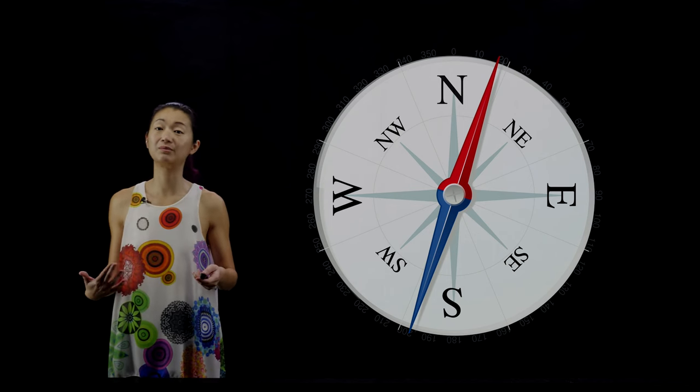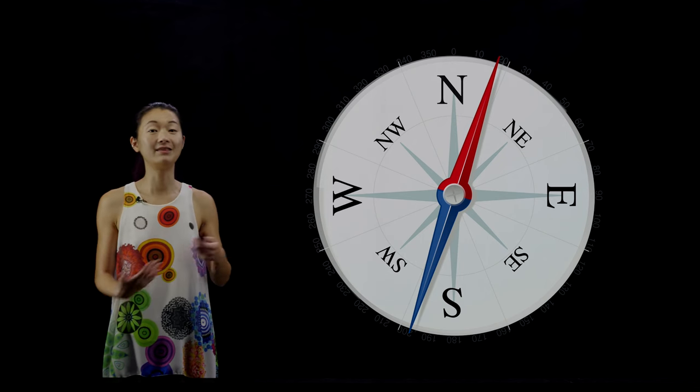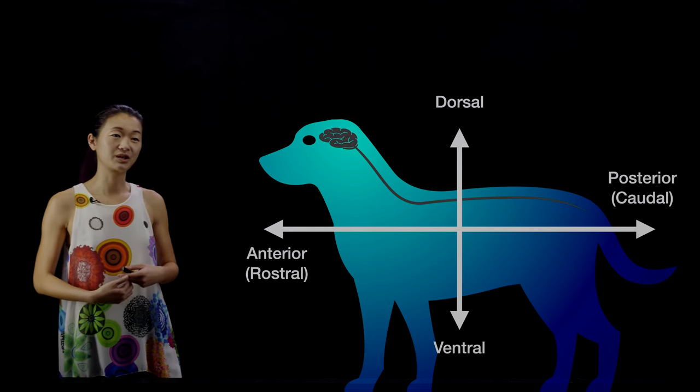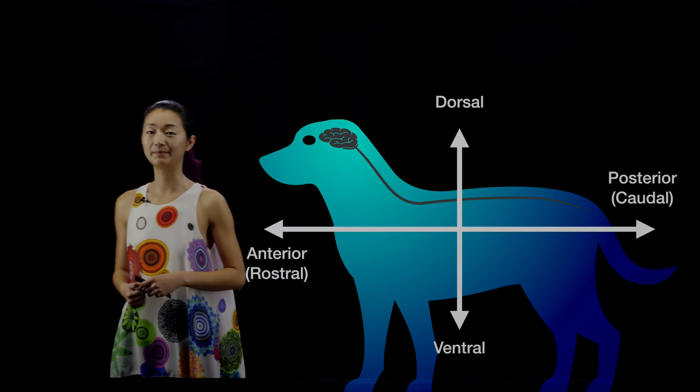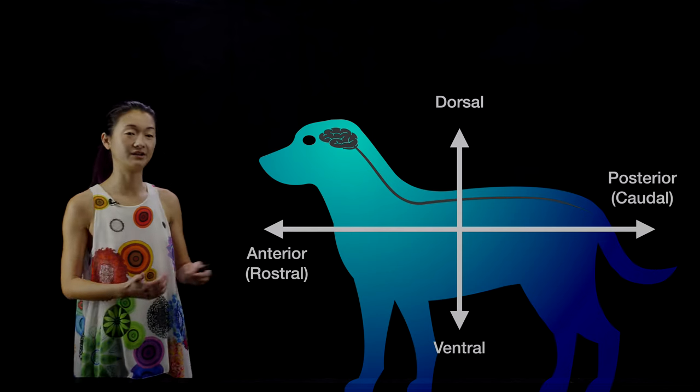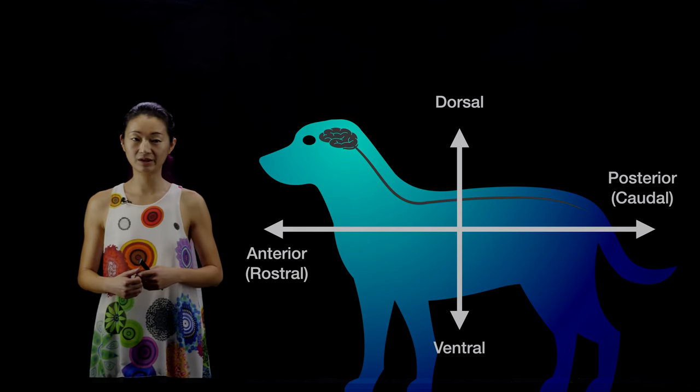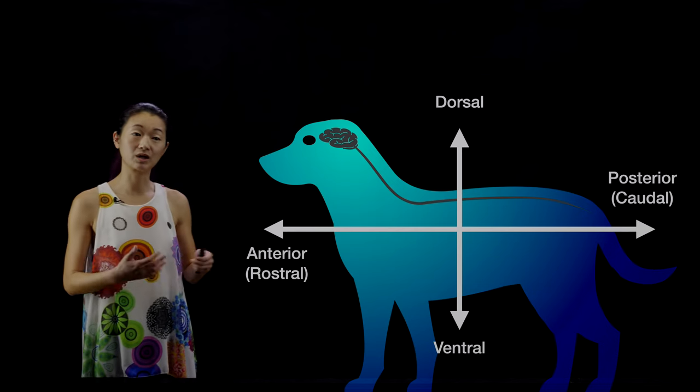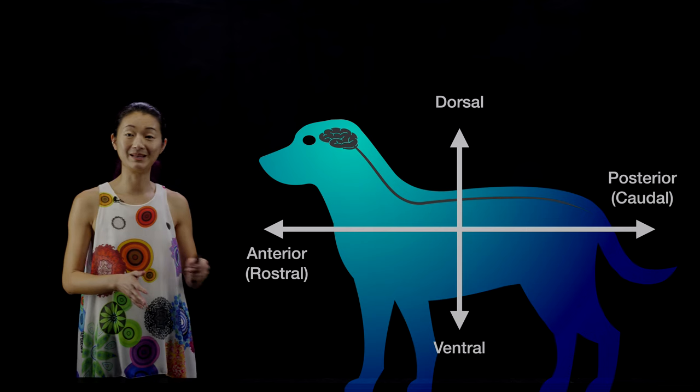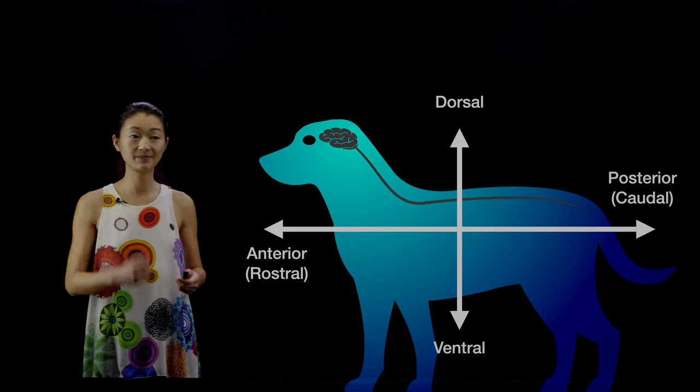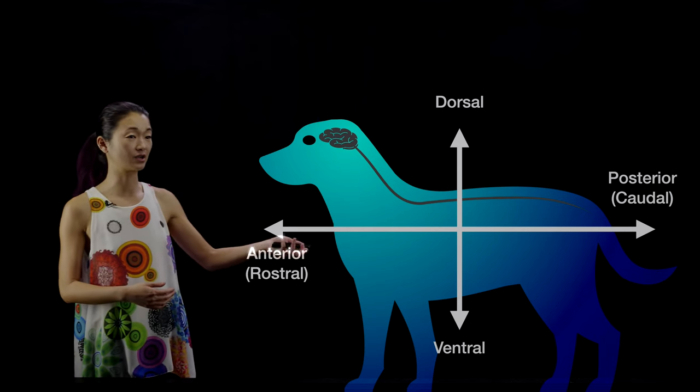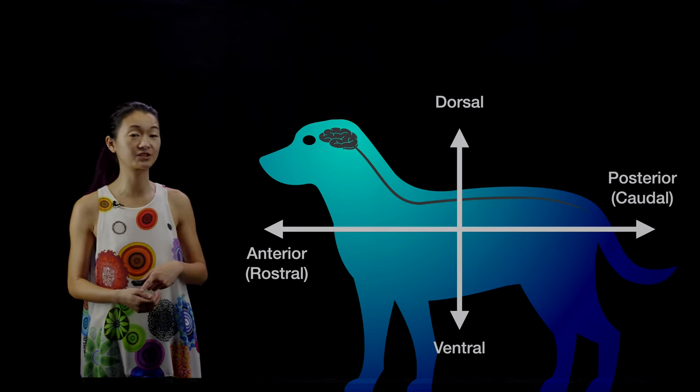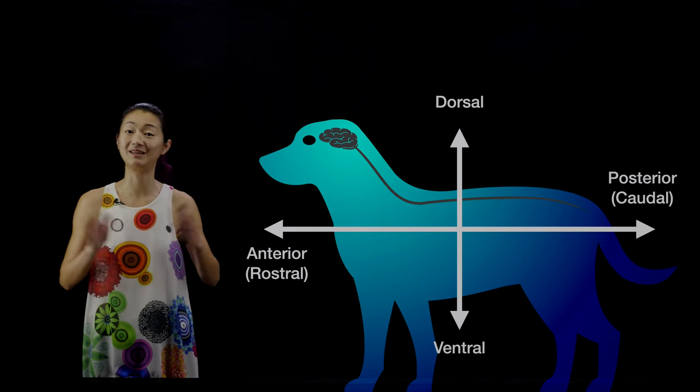Once you have this terminology, you'll be able to describe more precisely where we are in the brain. We can start with a picture of a dog. The basic words we're going to learn are there's a front to back axis, which we call anterior for front and posterior for back. This is often sometimes called rostral-caudal as well, and these mean exactly the same thing. Rostral is anterior, rostral for nose, and caudal is posterior, caudal means tail.